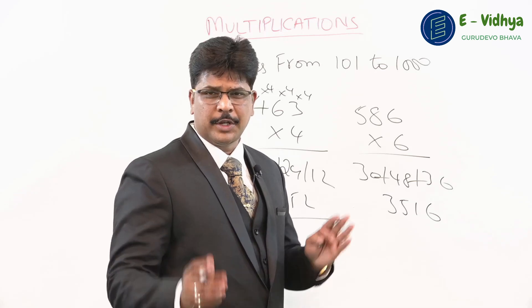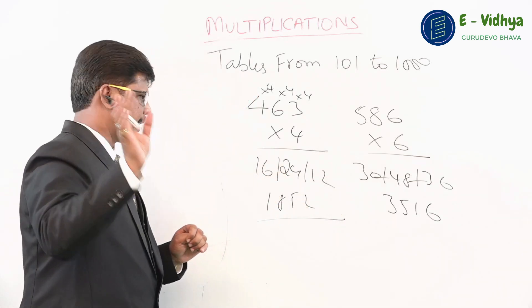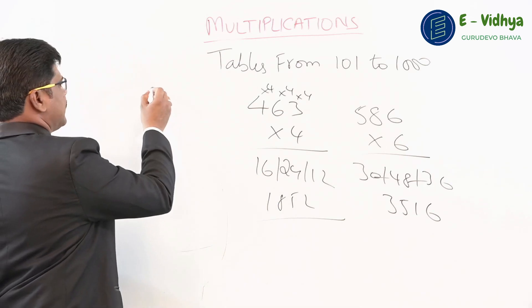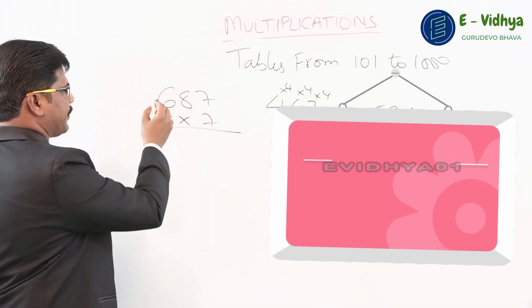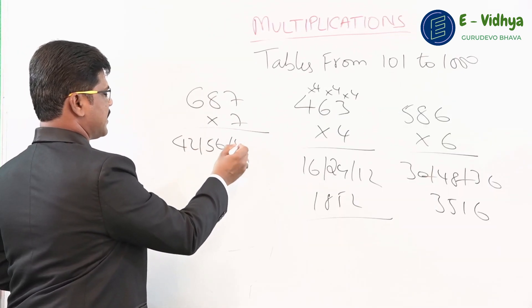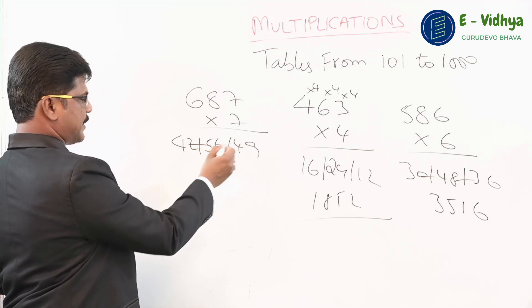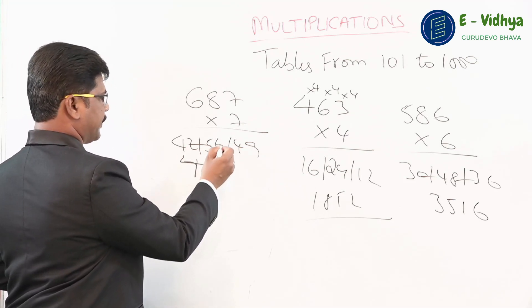687 times 7: seven sixes are 42, seven eights are 56, seven sevens are 49. So 47, next press carry to get 48, and the end number is 09. The answer is 4809.